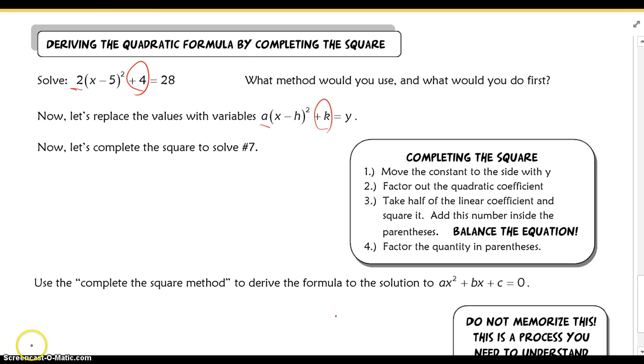Hold on a sec while I yell at my dog. Okay, so the first thing I'm actually going to do is we're not going to use completing the square to solve number 7. I'm going to change the problem, and we're going to complete the square to solve this quadratic here. Okay, we're going to follow the steps to the right as well in order to complete the square. So, to complete the square, what you first want to do is move your constant. Okay, we're going to move our constant. It's actually not to the side with y. It's to the side of the 0. So, I subtract over my constant.